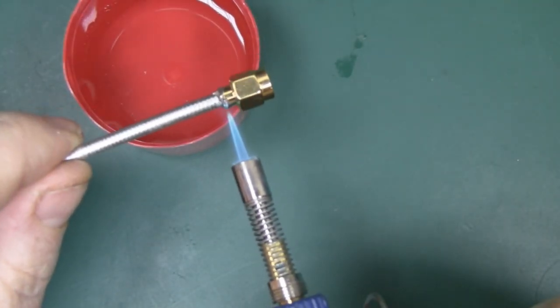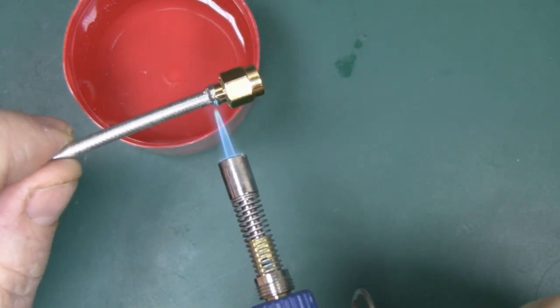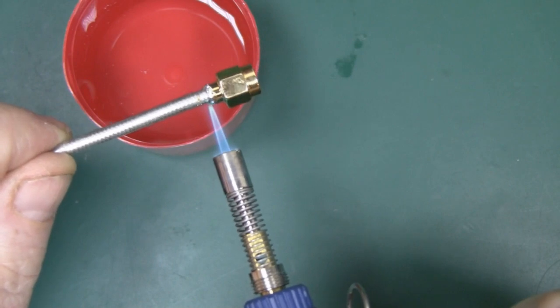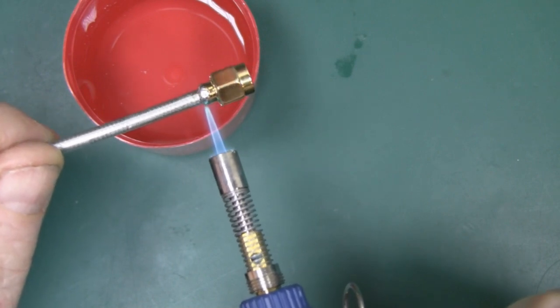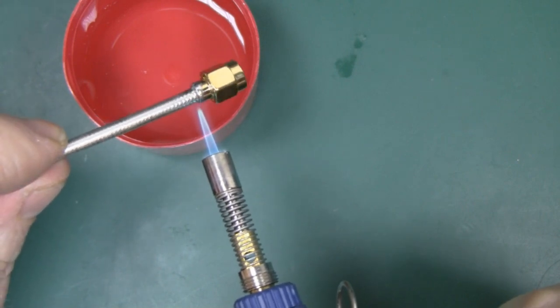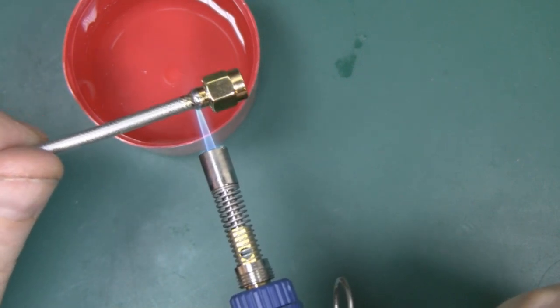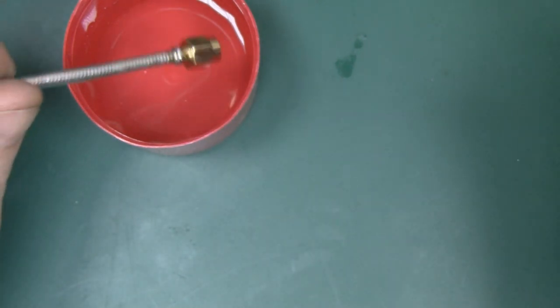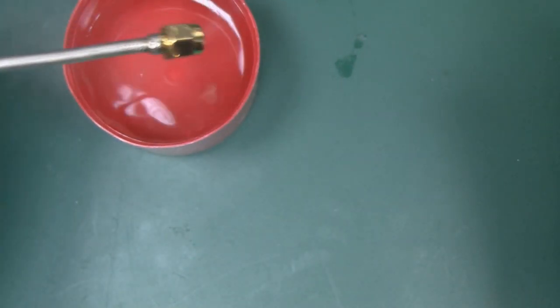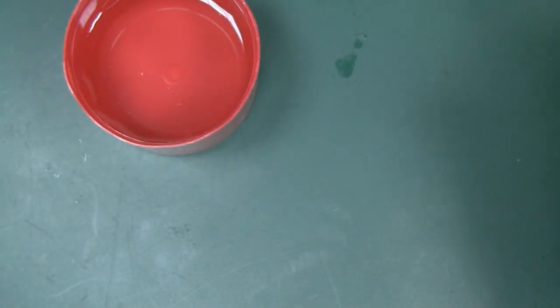Just use the blowtorch then to get some heat into the coax and the SMA connector. It doesn't take long for it to start flowing all the way around there. Once it's flowed around, dip it in the distilled water, give it a bit of a shake, and then put it to one side to cool down.